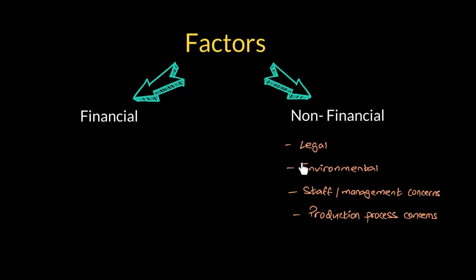Environmental factors are also important — for example, a factory being set up near a school. We have seen many cases around the world where factory pollution or certain chemicals can be dangerous to children attending that school. Any factory that pollutes the area and makes it difficult for the neighborhood to survive raises environmental concerns that must also be considered.